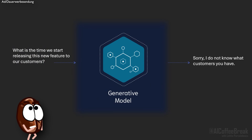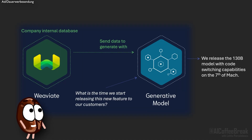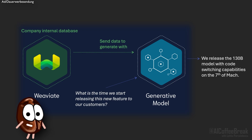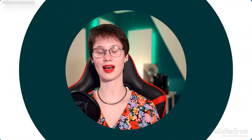Let's say we ask ChatGPT: 'What is the time we start releasing this new feature to our customers?' An out-of-the-box LLM like ChatGPT would not have any idea about that because it has a limited knowledge horizon. But if we use RAG, the vector database can search through our proprietary and company-internal database and fetch the relevant information, allowing the language model to generate more accurate and relevant outputs.